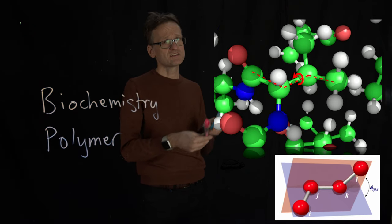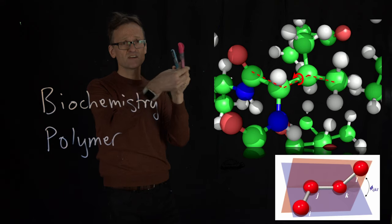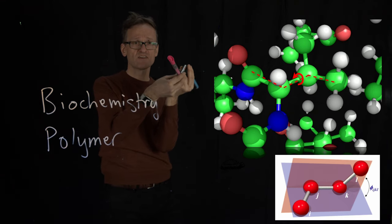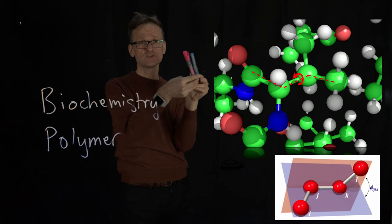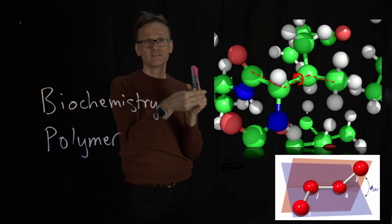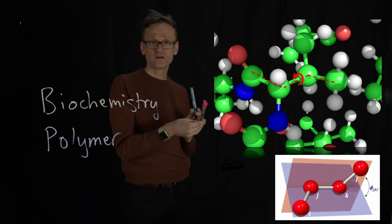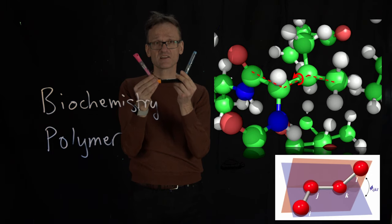The problem with that is if I take this torsion angle here, if I start out here, and then I rotate this an entire turn, 360 degrees, 2 pi. Well, the deviation is now 2 pi, but I'm back in exactly the same state as I started.